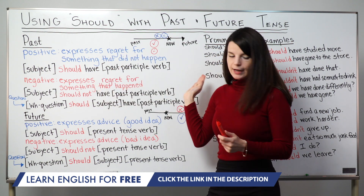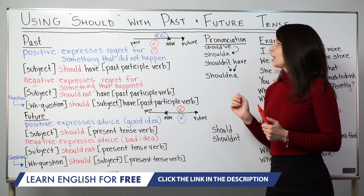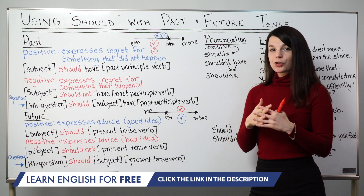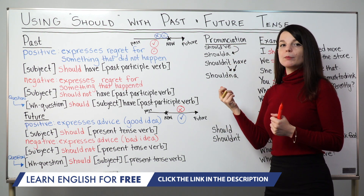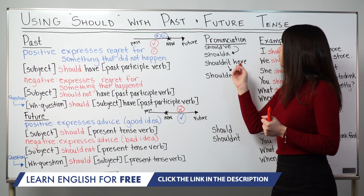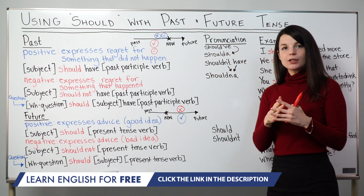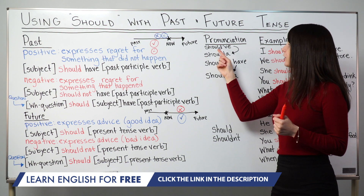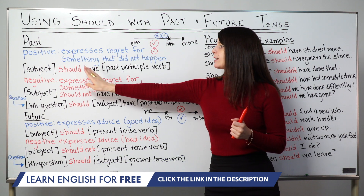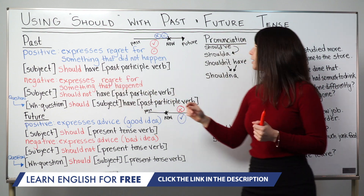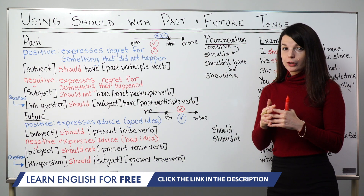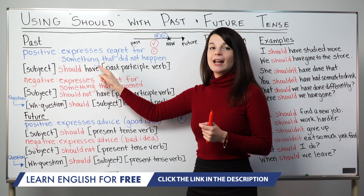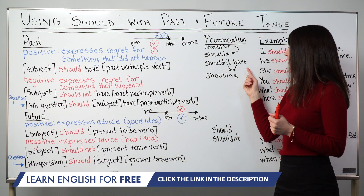Now for pronunciation tips. You may have noticed that should have and should not have become reduced when people are speaking — much shorter. When making positive sentences, the most common reduction is should've — should apostrophe V-E. Should've comes from should have; we drop the 'ha' part and just use the V sound. To make it even shorter, you'll often hear shoulda — that 'a' sound is just the 'a' from have, very short. So: I shoulda.